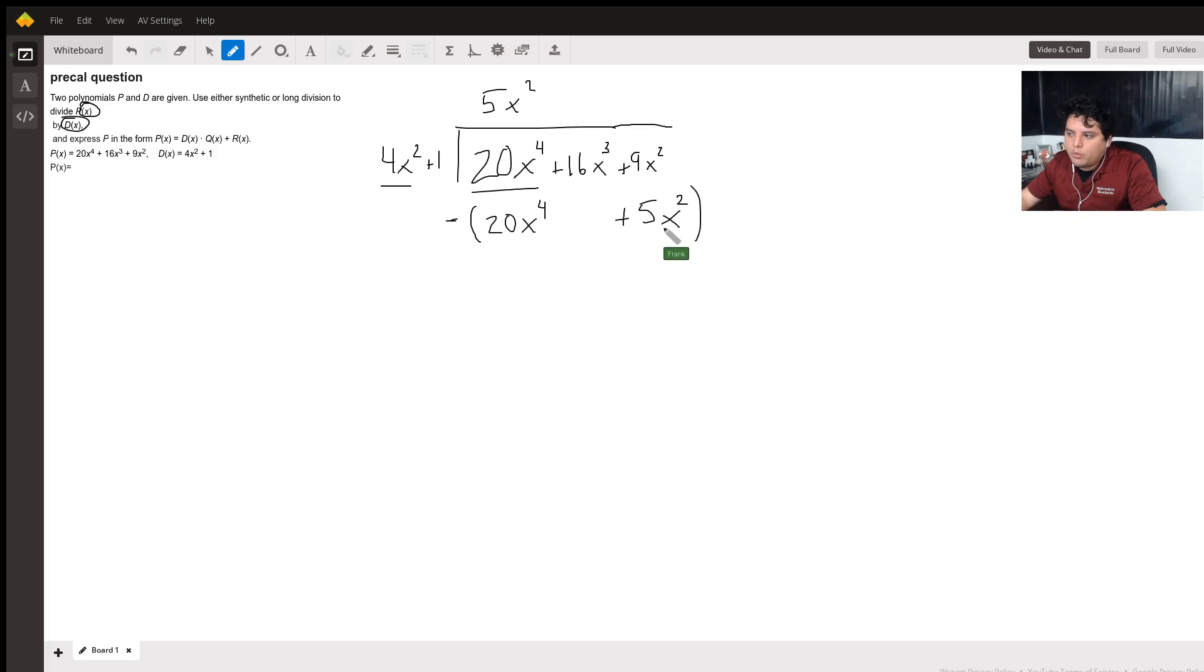And I want to align the x squares with x squares, the x to the fourths with the x to the fourths. Anyway, when I subtract, I end up with my x to the fourths going away. And 9x squared minus 5x squared is going to be 4x squared.